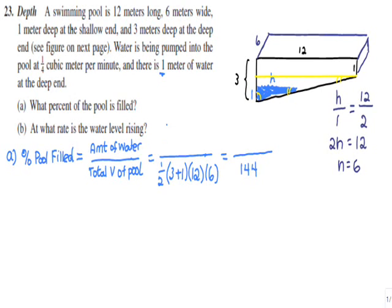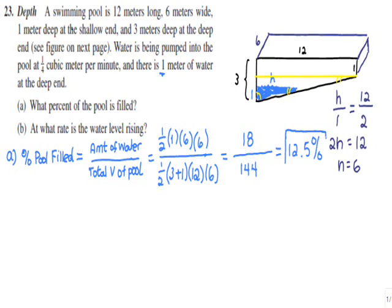Now we can fill in the formula for the volume of the triangular prism of water: one half times base 1 times height 6, multiplied by the 6-meter width. That gives 18 cubic meters of water. Dividing 18 by 144 reduces to one eighth, which as a percentage is 12.5%. That takes care of Part A with no calculus.